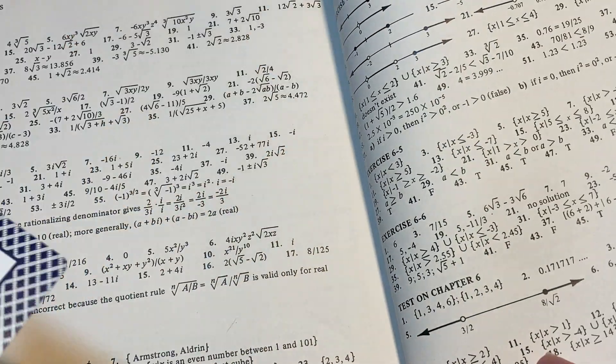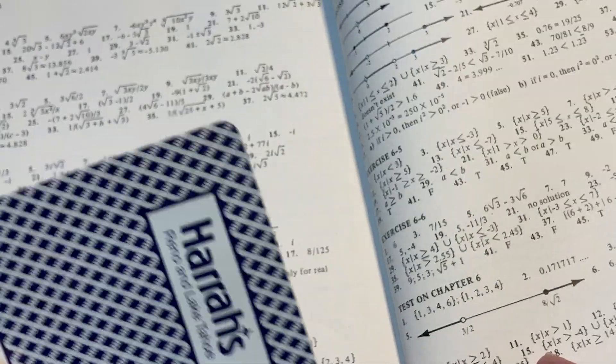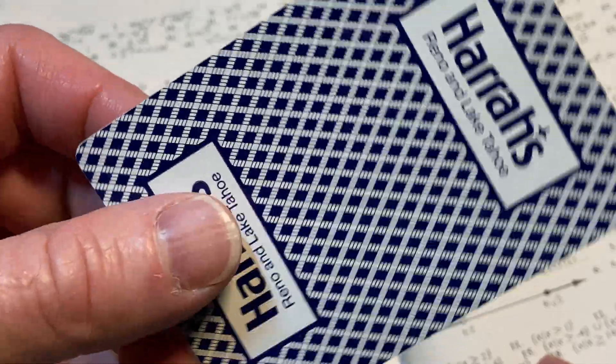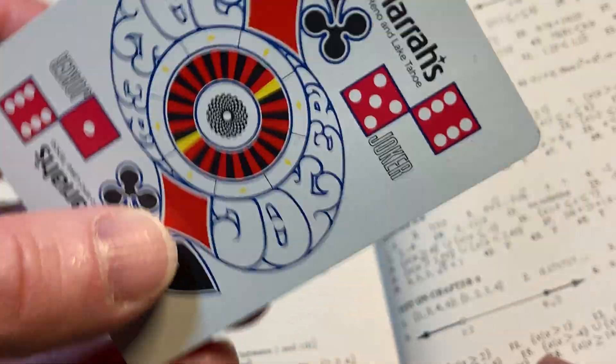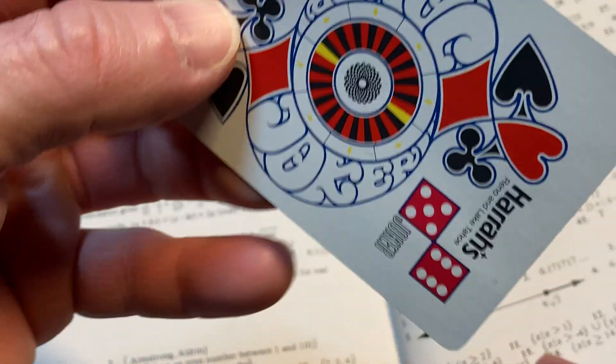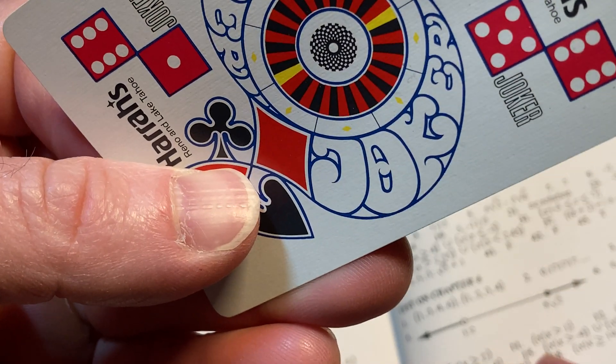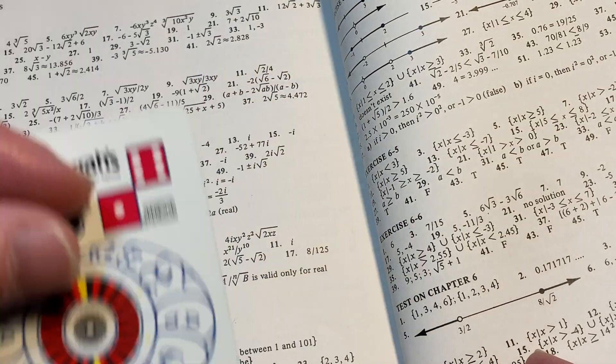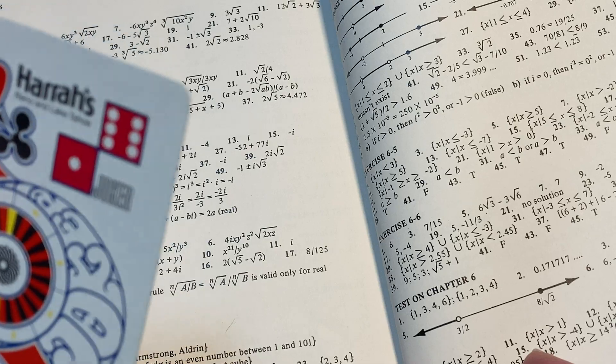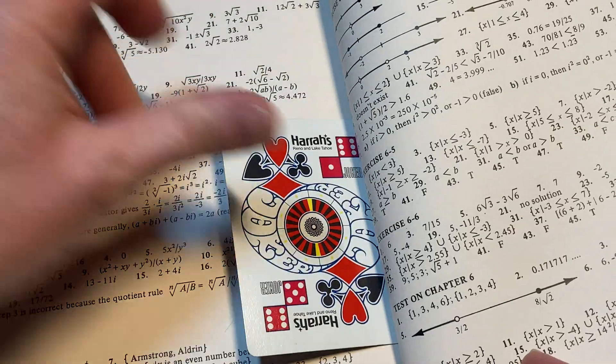Oh, what's this? Look at this. We found a card. Harrah's Reno and Lake Tahoe. Where is that? I guess it's there. It's a card. And it just says Reno. Oh, it's the Joker. It's the Joker card. Wow. What does that mean, right? What does it mean when you find the Joker card in a math book? Is that like good luck? Is that bad luck? Hopefully it's good. That's pretty cool. Interesting.